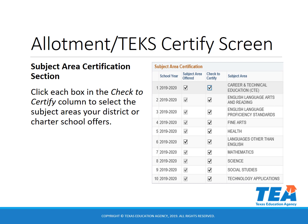Once you are on the allotment antiques certification screen, the first section you will need to look at is the subject area certification section. In this section, you will click each box in the check to certify column to select the subject areas your district or charter school offers.